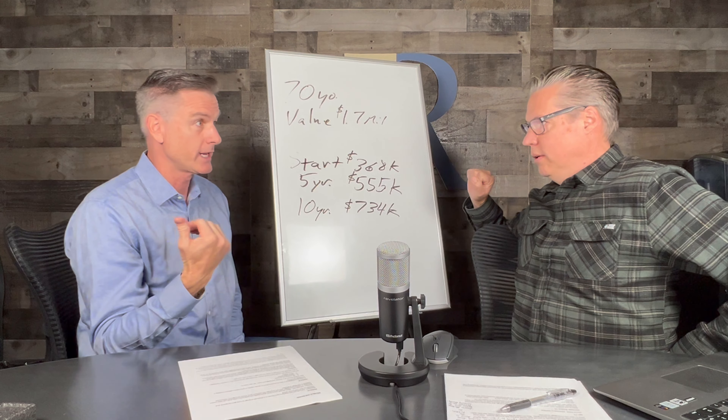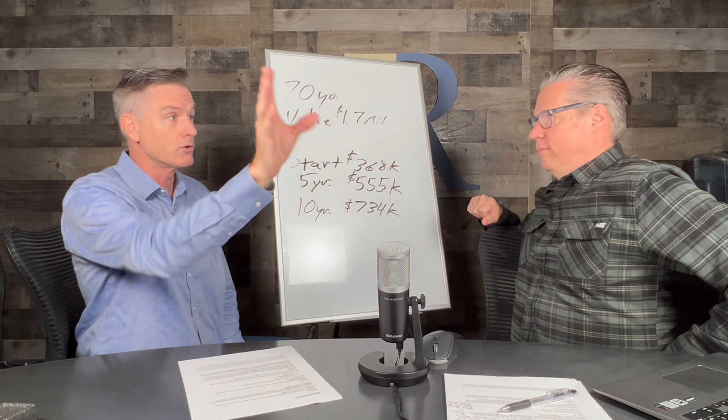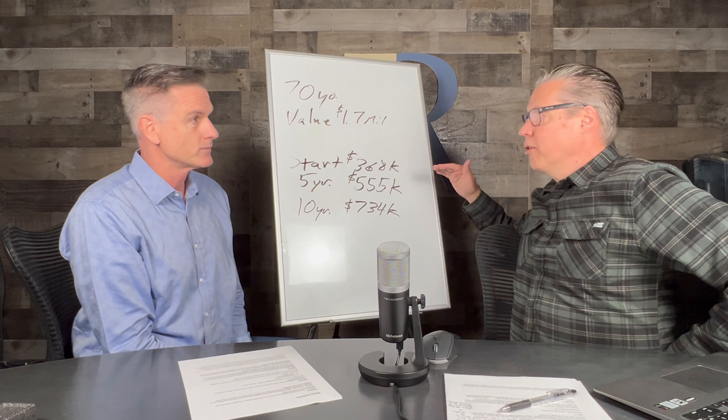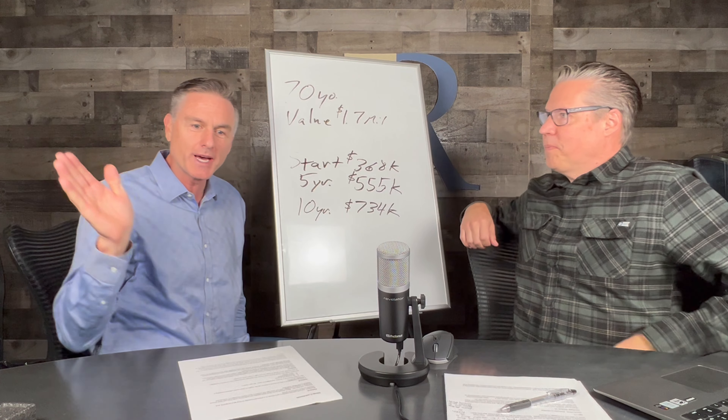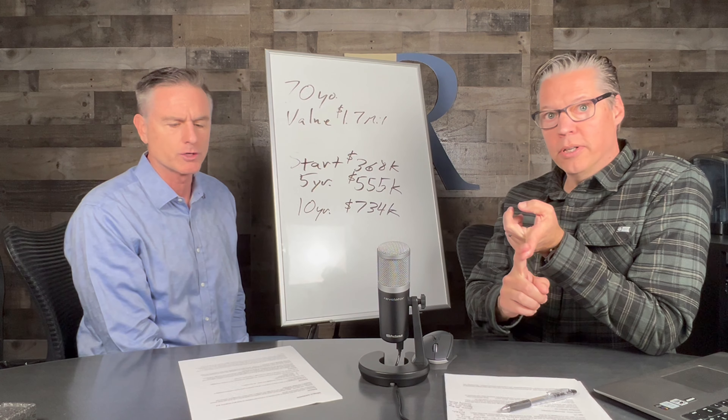And use it tax-free, however they like. They can put on a new roof, they can pay for a wedding, they can go on a vacation, they can do whatever they want with that. And not create a mortgage payment. We cannot say that enough. All of this is without making a mortgage payment. Of course, you're still paying your homeowner's insurance, your property taxes, which you would do regardless. Those are required anytime you have a mortgage. And you have to maintain your house.